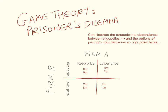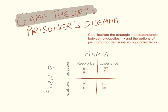Game theory is often used to illustrate the strategic interdependence and the dilemmas that oligopolistic firms face. A very famous example is the prisoner's dilemma, used to illustrate the strategic interdependence between oligopolies and the pricing and output decisions an oligopolist faces. Let's assume there are only two firms in the market — firm A and firm B — making this market a duopoly.